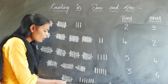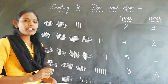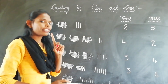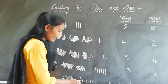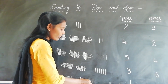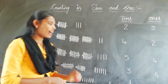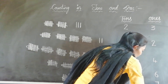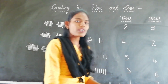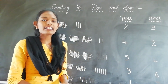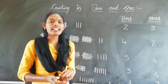Now here we have 1 bundle of 10 sticks, so how many tens do we have? We have 1 ten and 7 ones. So the number is 17. Okay children, do you all understand? Counting in tens and ones. Thank you.